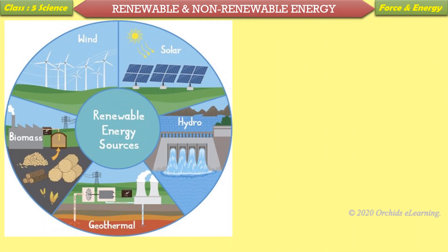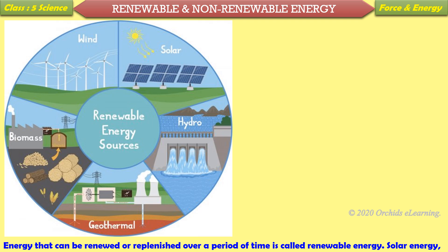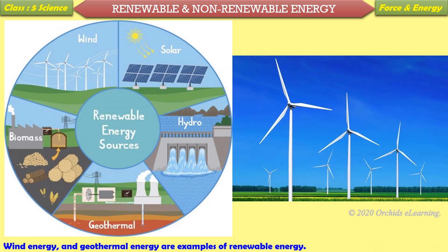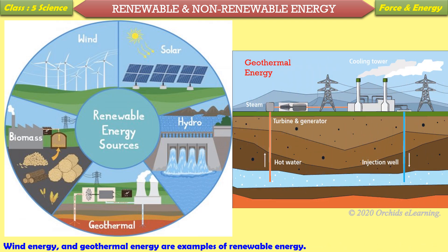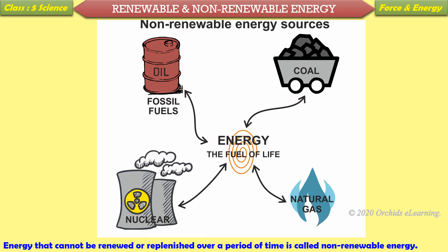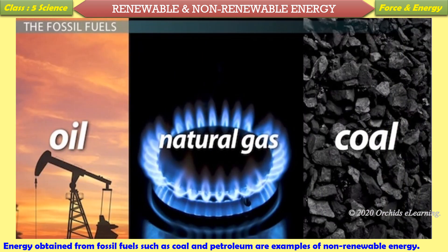Renewable and non-renewable energy: Energy that can be renewed or replenished over a period of time is called renewable energy. Solar energy, wind energy, and geothermal energy are examples of renewable energy. Energy that cannot be renewed or replenished over a period of time is called non-renewable energy. Energy obtained from fossil fuels such as coal and petroleum are examples of non-renewable energy.